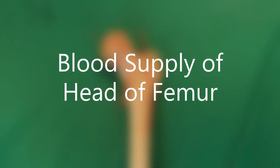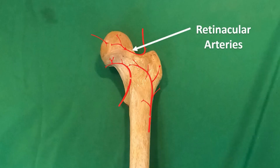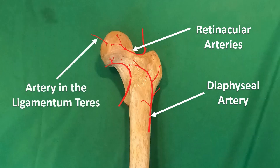Blood supply of the head of the femur. The head of the femur has three arterial supplies. First, the retinacular arteries. Second, vessels traveling up from the diaphysis, from the diaphysial artery which is a branch of the second perforating branch of the profunda femoris. Third, the artery in the ligamentum teres. Although its contribution is negligible in adults, it is the main blood supply to the femoral head in children when the femoral head is separated from the neck by the cartilage of the epiphysial line.